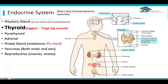The pineal gland — really the only thing tested on that is that it produces melatonin, which helps you fall asleep. The way I remember that is I imagine there's a pin in your heel and you can't sleep, so if you remove the pin from your heel, you can fall asleep with the help of melatonin. The pancreas is a big-time question — it is both an endocrine and an exocrine gland.